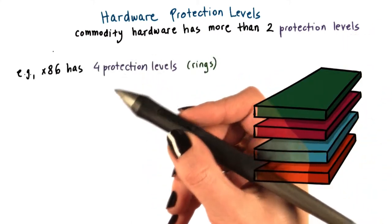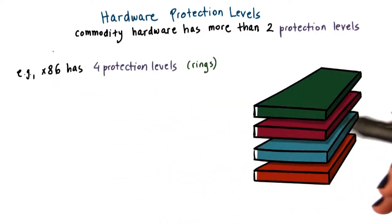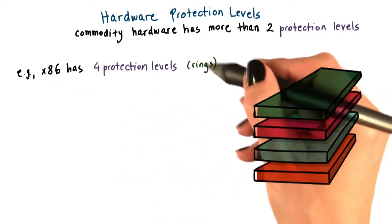Looking at the architecture that's at least in the server space most dominant, the x86 architecture, there are four protection levels called rings.